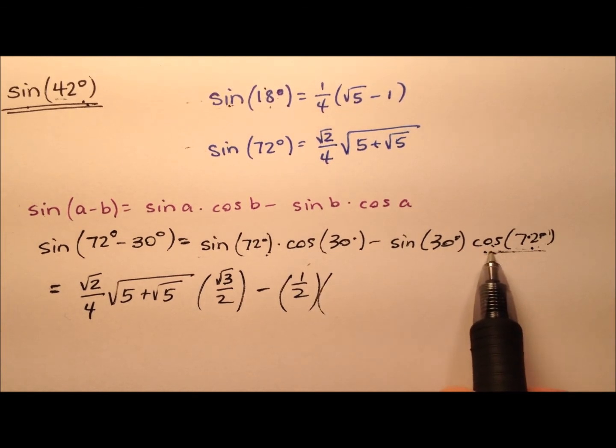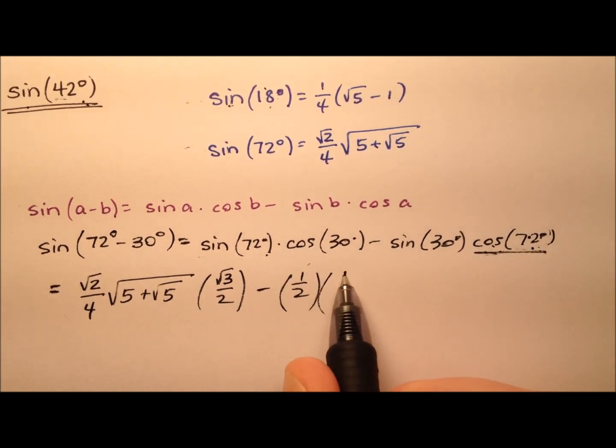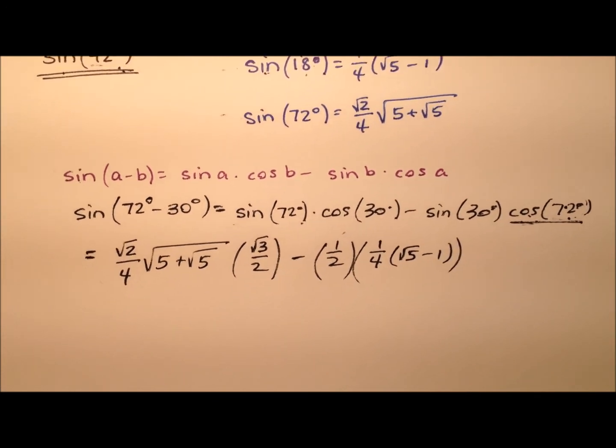So I'm going to go ahead and exchange this for the sine of 18 degrees, which is 1 fourth times this quantity, the square root of 5, minus 1.